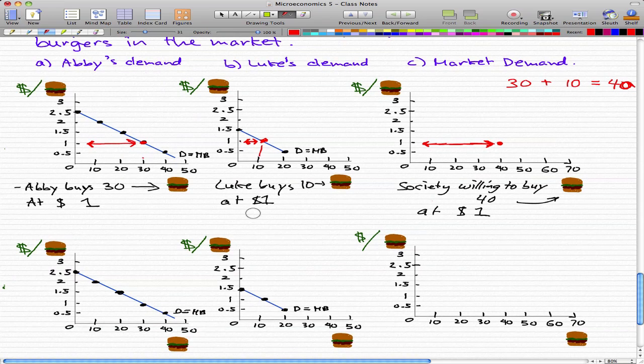Now that that's done, we already know the process of how to get this market demand curve. This curve, which is Abby's demand curve, and this curve, which is Luke's demand curve, is the same as above. But now we're going to use them to get the entire curve for the market demand. Here we only got the point. This time we're trying to get the whole curve.